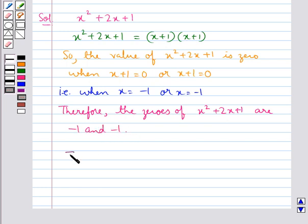Hence, our final answer is zeros of x squared plus 2x plus 1 are minus 1 and minus 1.